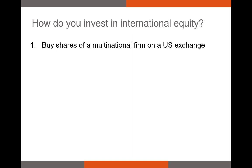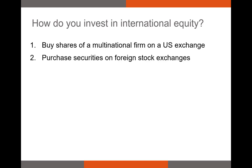For example, if demand for soft drinks increases in South Africa, Coca-Cola is going to benefit — we'd see increased profit from that increased demand, potentially leading the firm to increase its dividend. Another way to invest internationally is to simply buy shares of stocks that trade on foreign stock exchanges. For example, if you identified a firm in Botswana where shares are undervalued, you might be able to buy shares directly on the Botswana Stock Exchange. Different exchanges have different rules, and your broker will determine which exchanges you're allowed to buy and sell on.